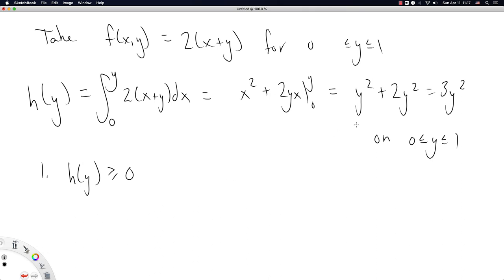You can indeed now check that h of y is a density function. One, it is non-negative numbers. 3y squared for y from zero to one gives us non-negative numbers. Let's check. Two, does it integrate to one? Well, that's just essentially the integral of 3y squared dy from zero to one. And that's equal to y to the third from zero to one. And that's equal to one minus zero, equal to one. Check.